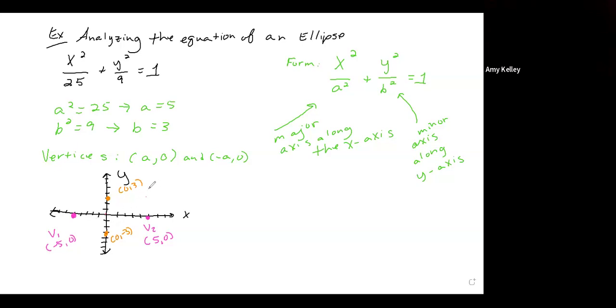Now, we're left to find the coordinates of the foci. We can do that using the formula c squared equals a squared minus b squared. C squared equals 25 minus 9. C squared equals 16. Taking the square root on both sides of the equation, c equals plus or minus 4. And I really should put the plus or minus here as well, just to be thorough.